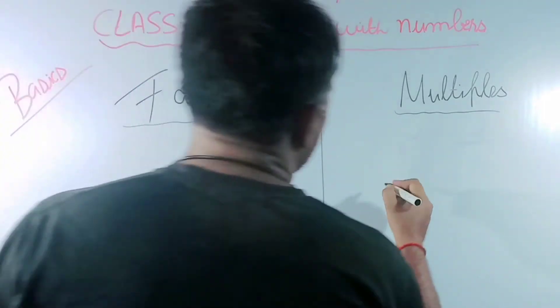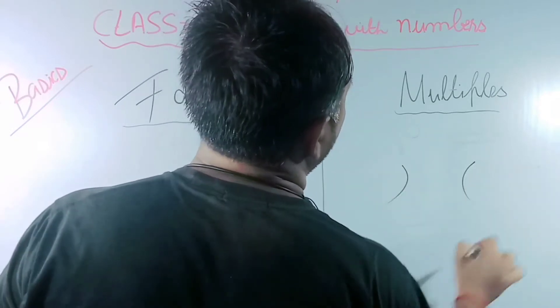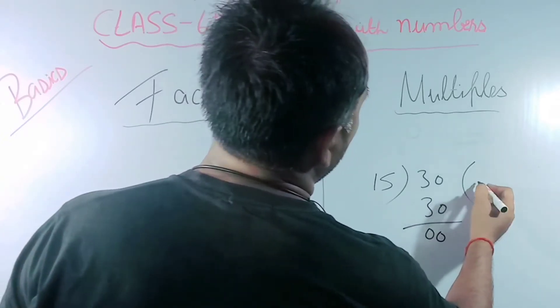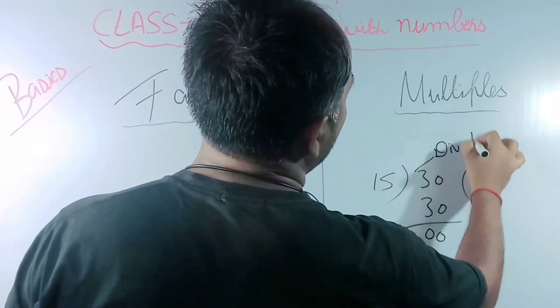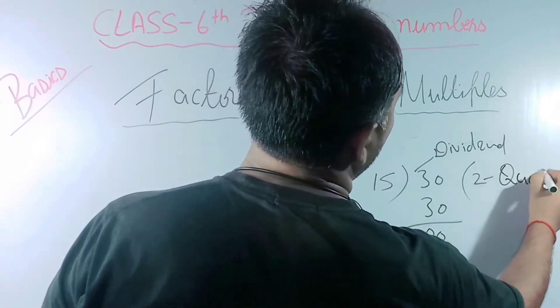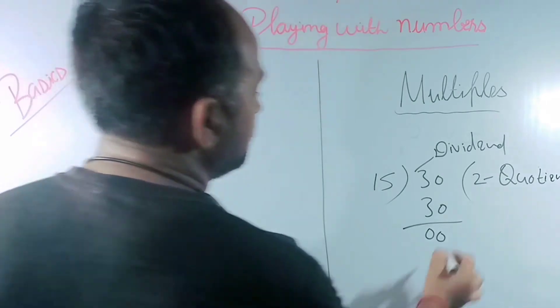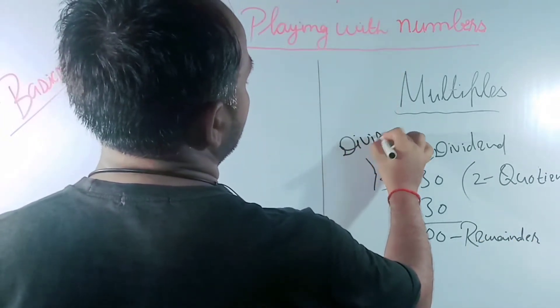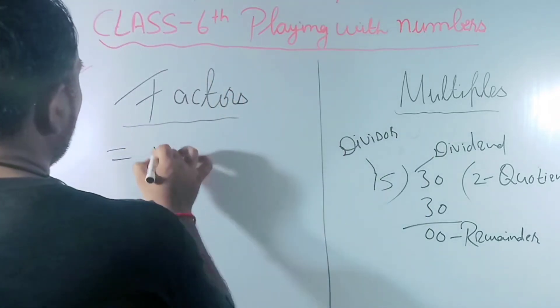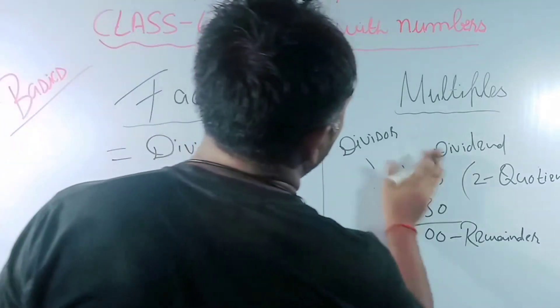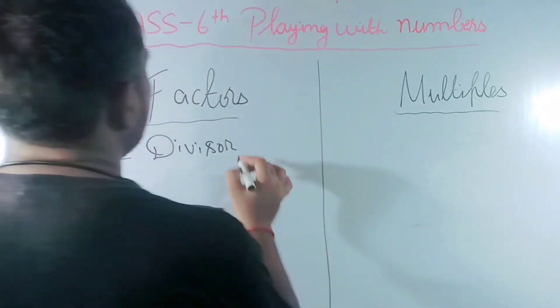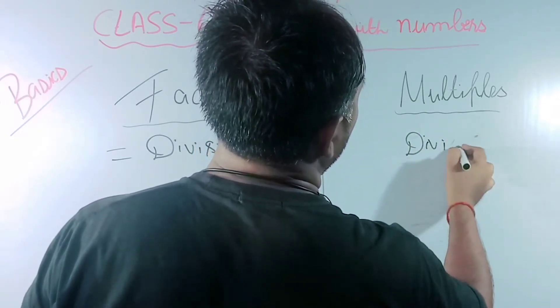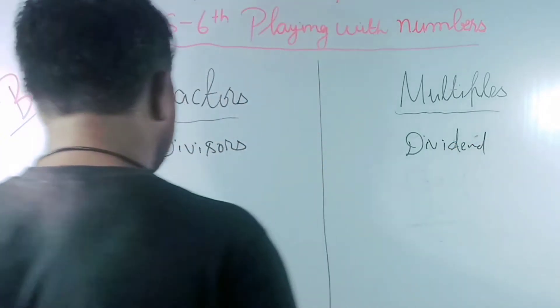We will understand factors and multiples with the help of one example. Suppose I'm dividing 30 by 15. So what will happen? 2 will come here and 0 will come here. So it is called dividend, quotient, remainder, and here is divisor. Factor is equal to divisor, or you can say divisors, and this is dividend.